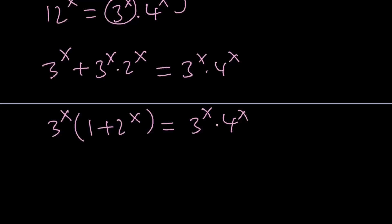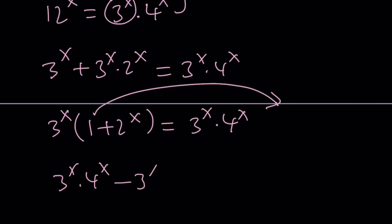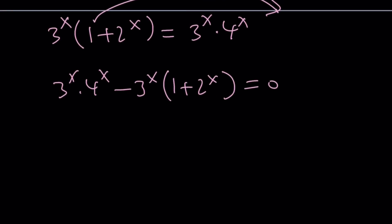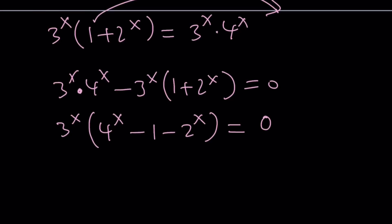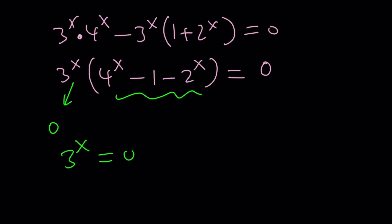Now we have two choices here. Either 3 to the power x equals 0, or these two things are equal. You can see this by putting everything on the same side: 3 to the x times 4 to the x minus 3 to the x times the quantity 1 plus 2 to the x equals 0. Then taking out 3 to the power x gives 4 to the x minus 1 minus 2 to the power x equals 0. So either 3 to the power x is 0 or that bracket is 0. But 3 to the power x can never be 0 for any real values.